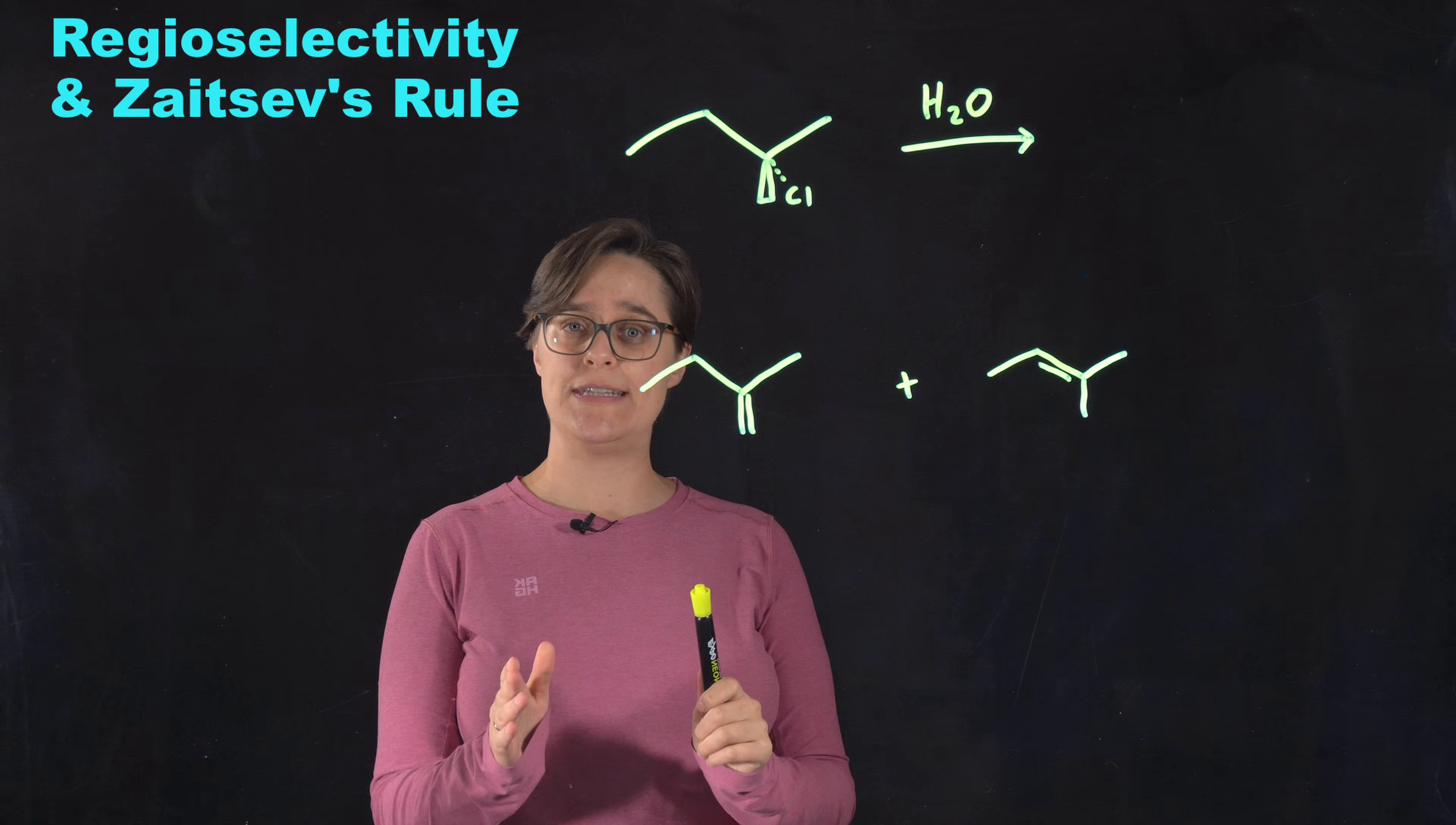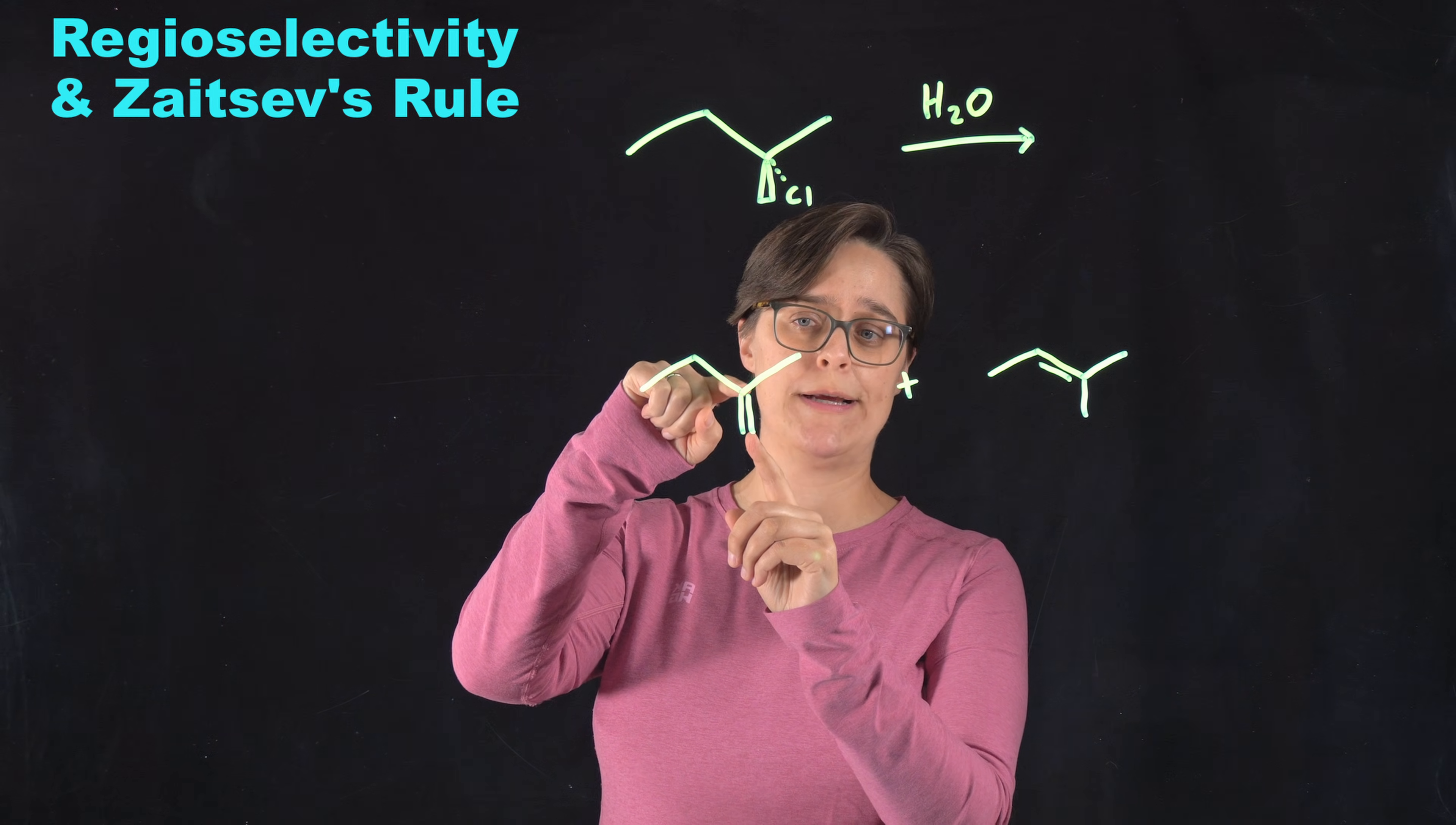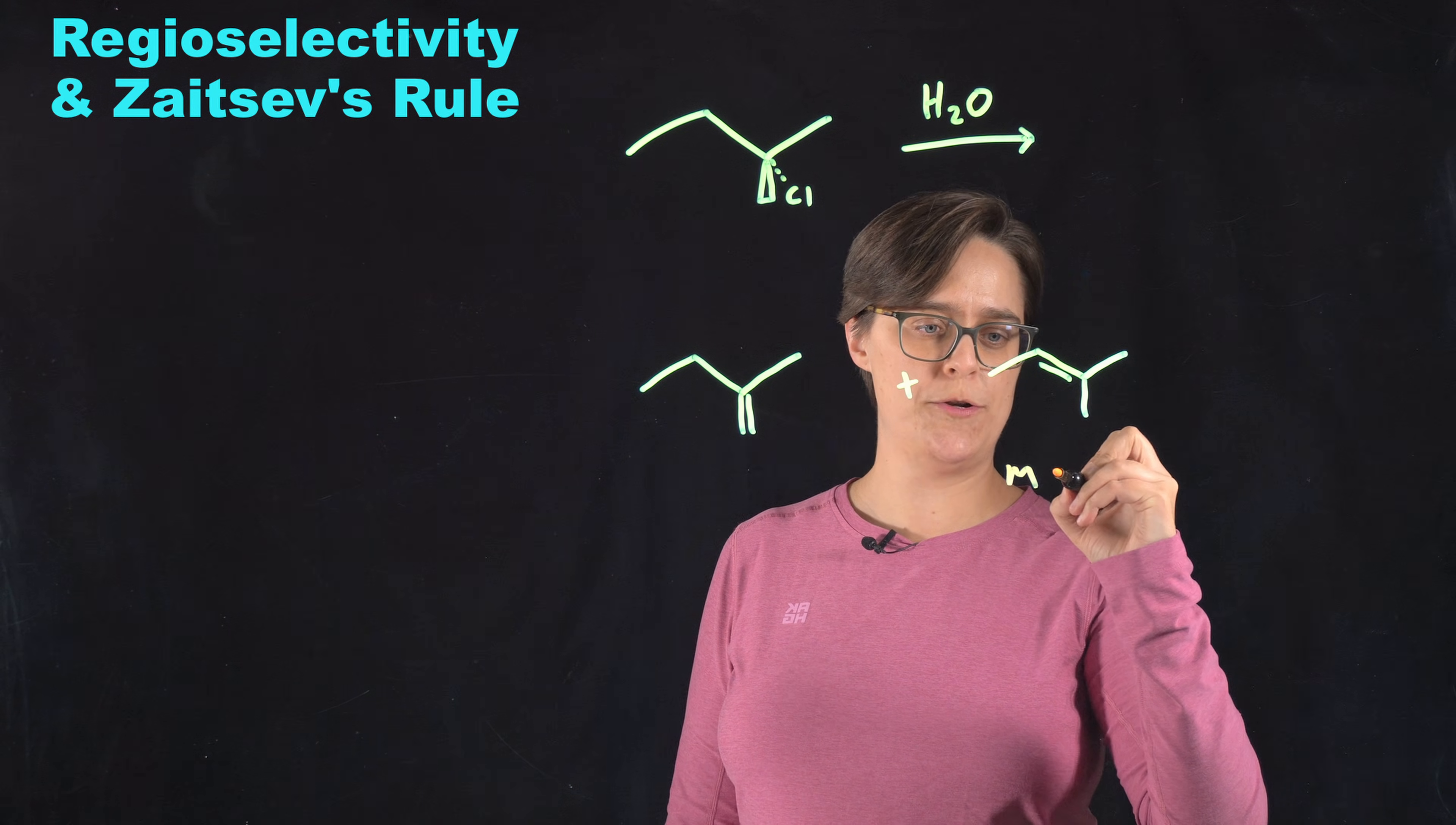So we need to follow something called Zaitsev's rule. I talked about it a lot in my E2 video. But the basic rule is the same here. The major product is the more substituted alkene. So we look at the alkene, meaning the double bond, and we count how many other carbons are bonded directly to these two carbons. This side is zero. This side is one, two. This is a disubstituted alkene. But looking here, we have one, two, three. This is a tri-substituted alkene. This is the more stable alkene that is going to make this the major product.